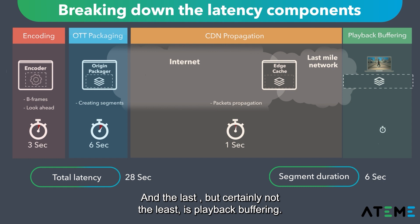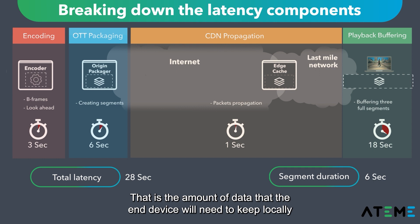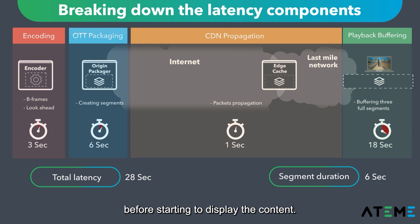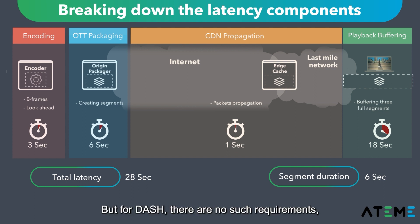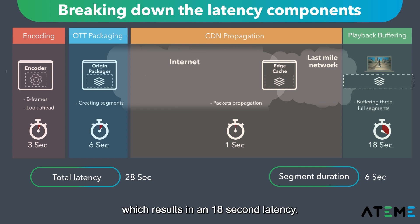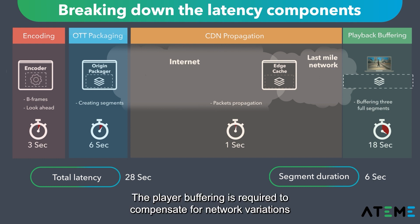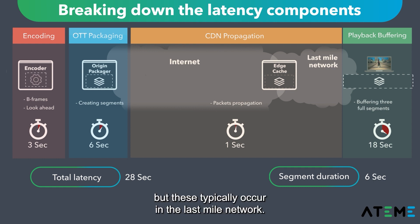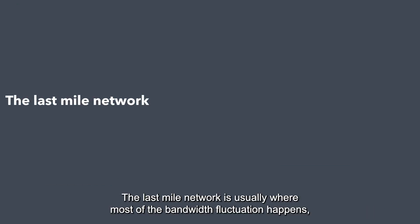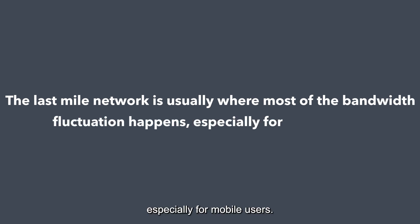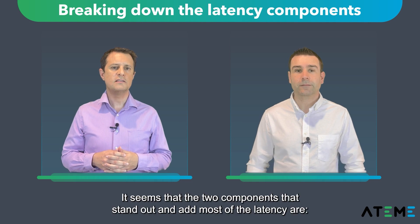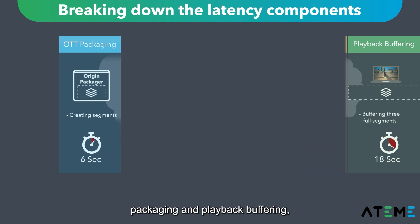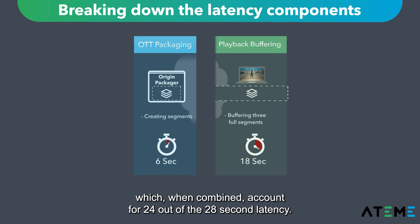The last component, but certainly not the least, is playback buffering — the amount of data the end device will need to keep locally in its buffer before starting to display the content. By default, most players follow the original HLS specifications requiring a three-segment buffer. For DASH, there are no such requirements and it is up to the implementation of each player. So here we have a six-second segment sequence times three segments, which results in an 18-second latency. Player buffering is required to compensate for network variations, typically occurring in the last mile network. So the two components that stand out and add most of the latency are the packaging and playback buffering, which when combined account for 24 out of the 28-second latency.